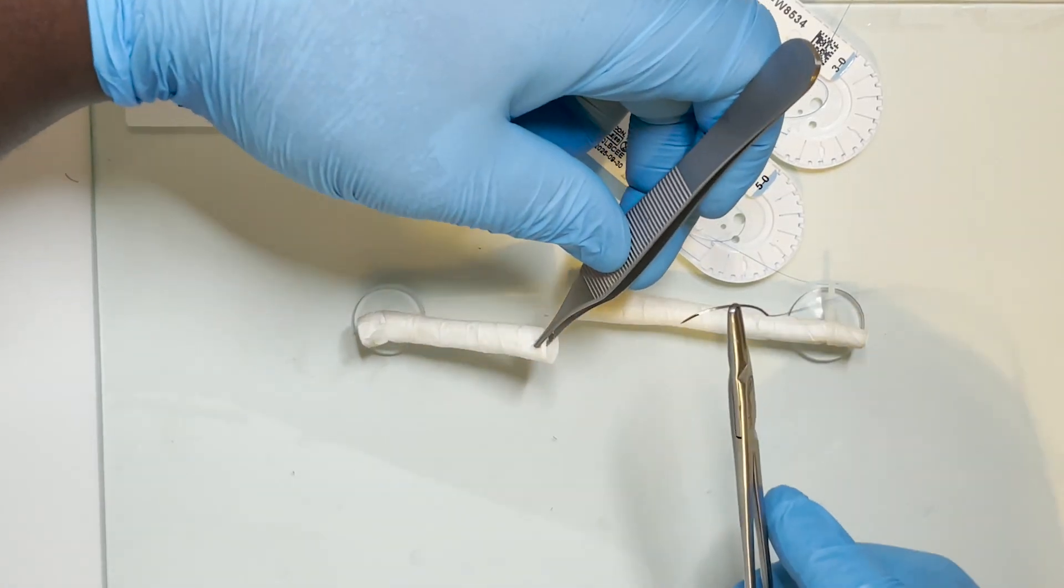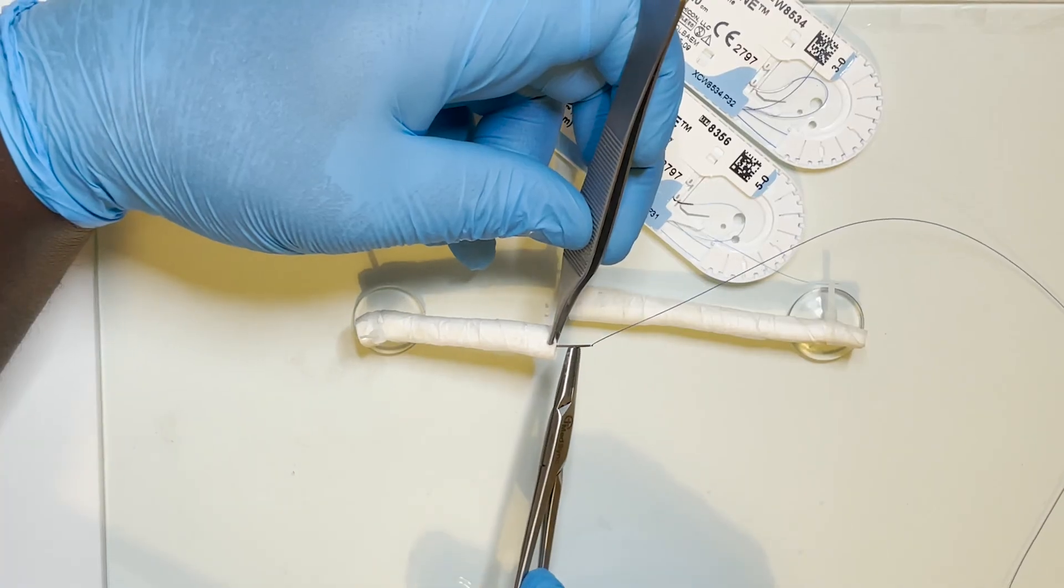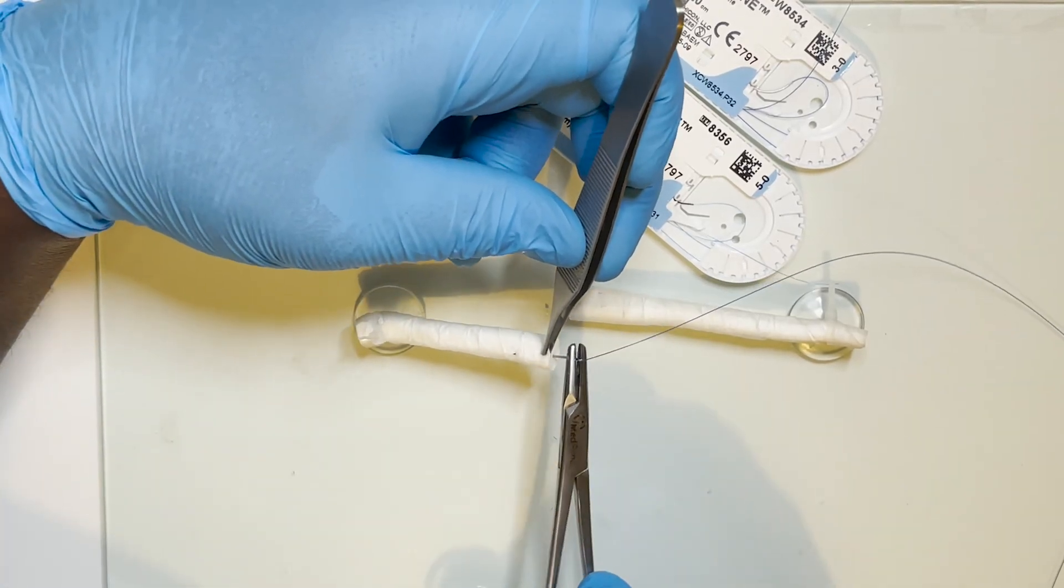The Adelaide repair is a four-stranded locking repair, characterized by two crosses on each half of the divided tendon.